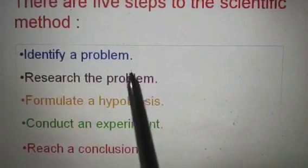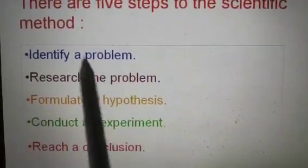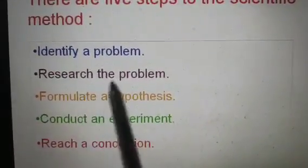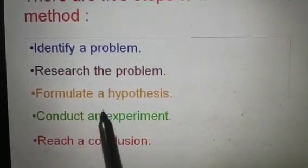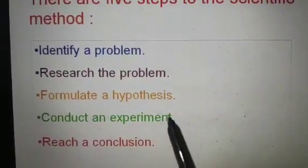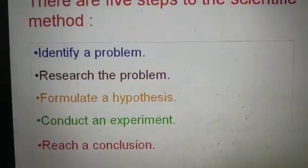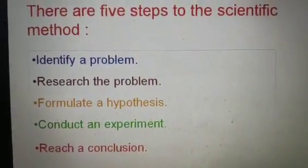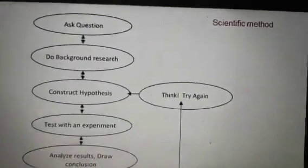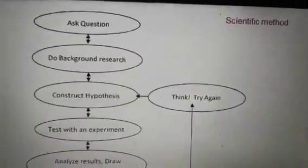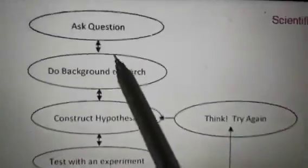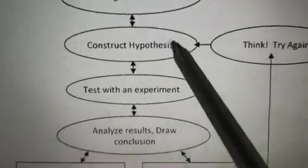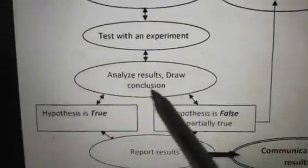While dealing with the scientific approach, we should know about the steps to the scientific method, which are also applicable for any research method. The five steps are: first, identify a problem — economic, social, environmental, or any other; then research the problem; then formulate a hypothesis; then conduct an experiment or collect data; and finally reach a conclusion with suggestive measures. In the flow diagram of the scientific method, you ask a question, do background research, construct a hypothesis, test with an experiment, then analyze results and draw conclusions.